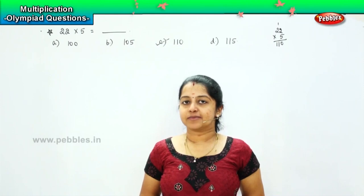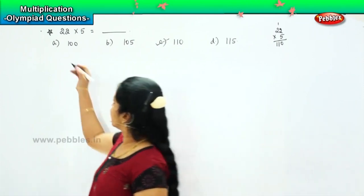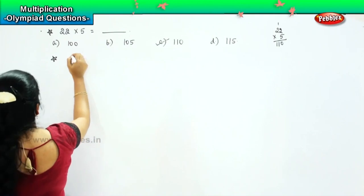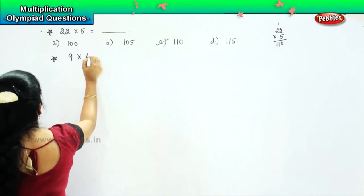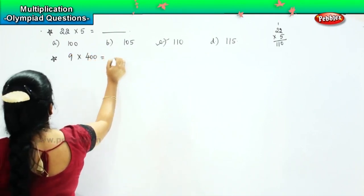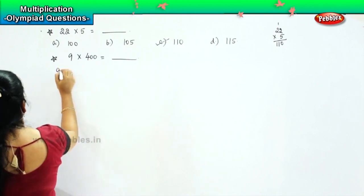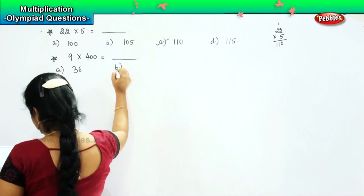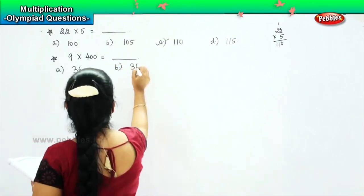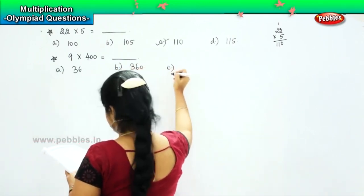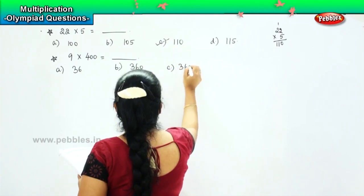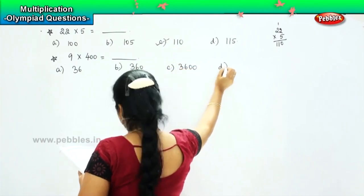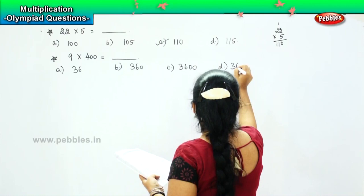So shall we do our next sum children? Here is your next question. The question says 9 into 400 is equal to dash and your options are 36, option B 360, option C 3600 and option D 36000.